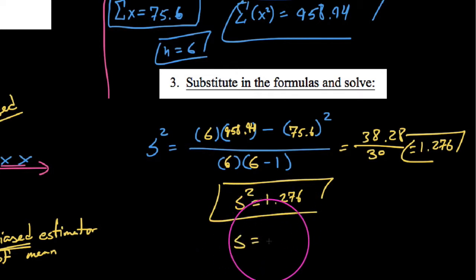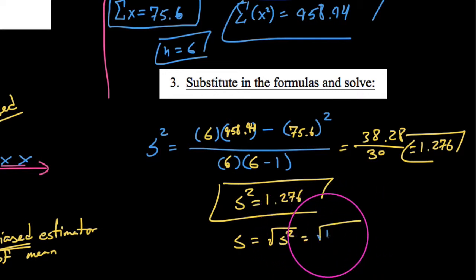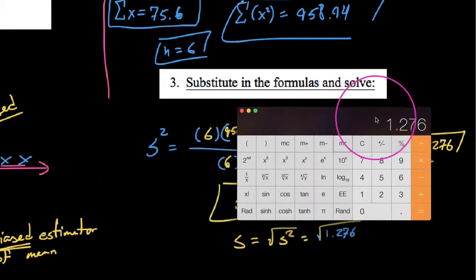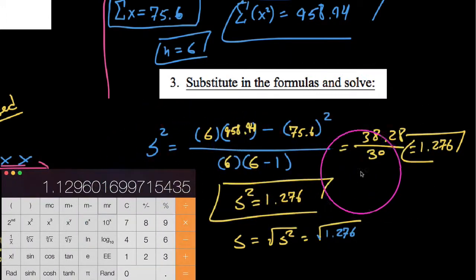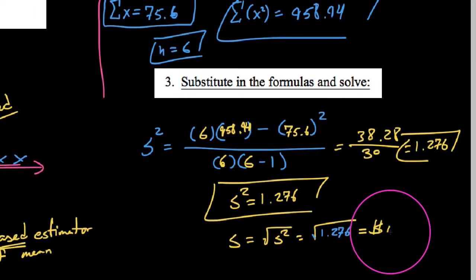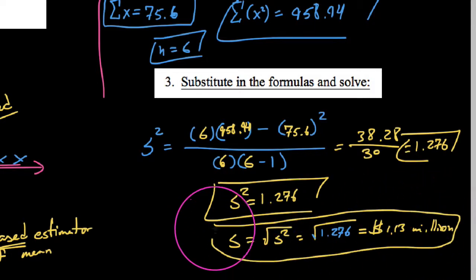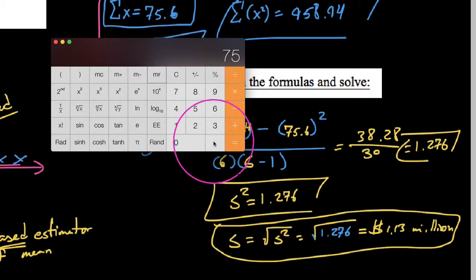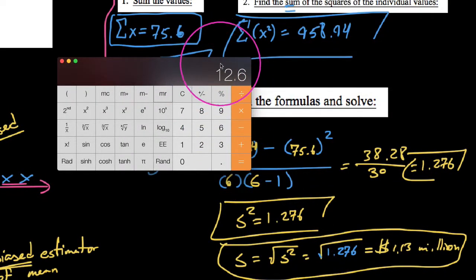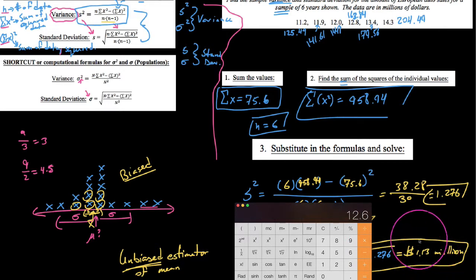Now to find S, the standard deviation, we just take the square root of the variance we just found. The square root of 1.276 is approximately 1.13. Since our original data went to the nearest tenth, we go one extra decimal place, giving us S equals 1.13 million dollars. The average annual sales are about 12.6 million dollars, and this tells us that on average, data lies within 1.13 million dollars above or below that mean.